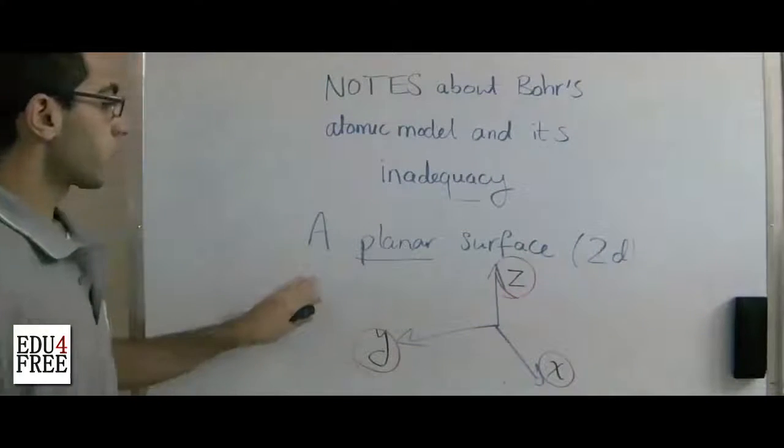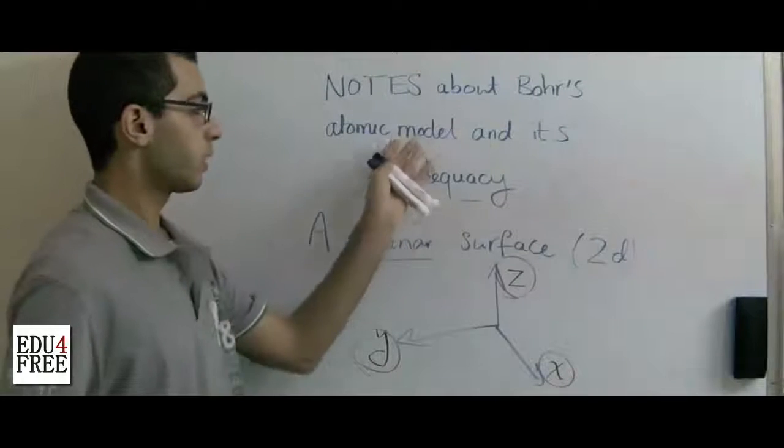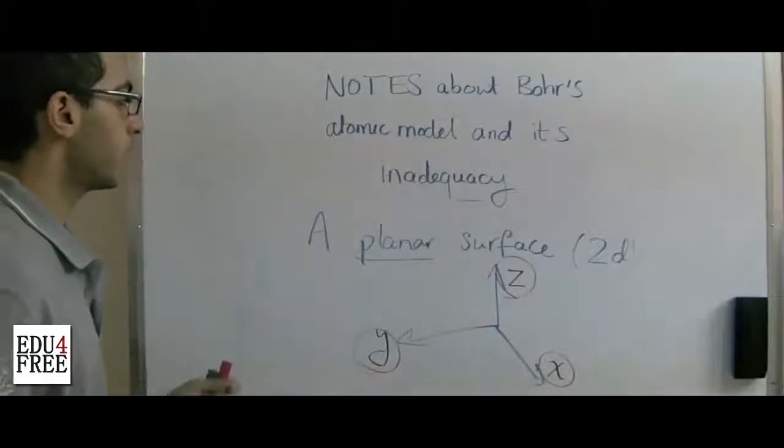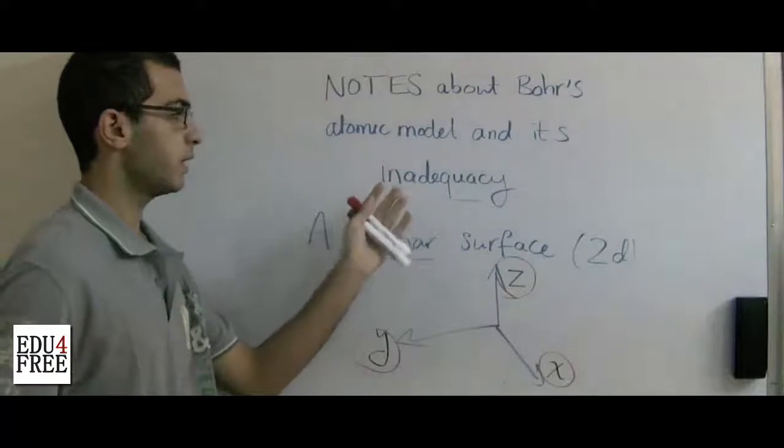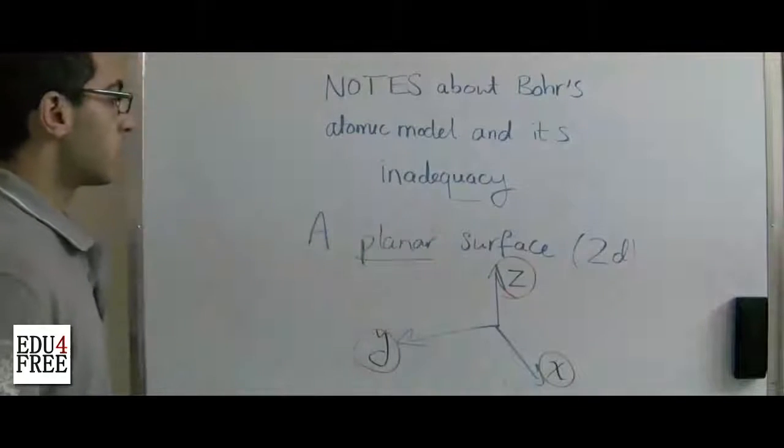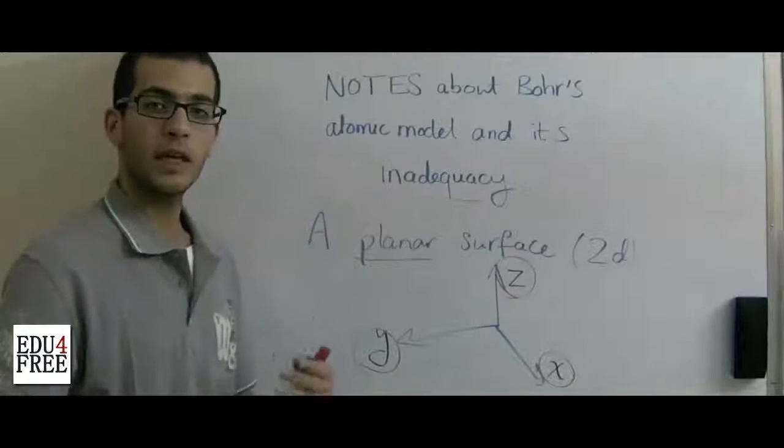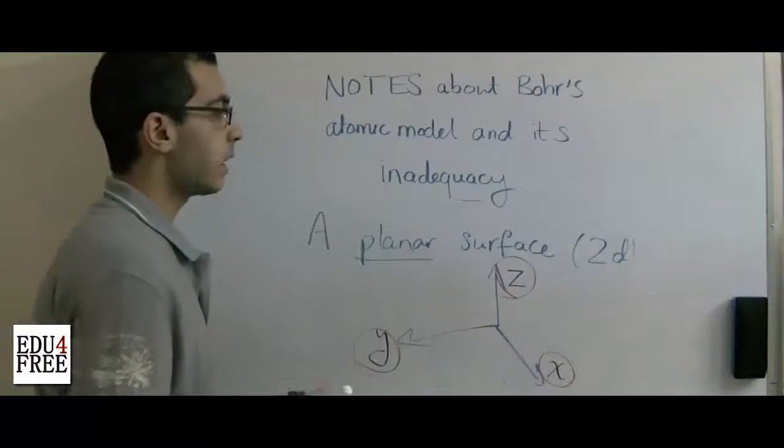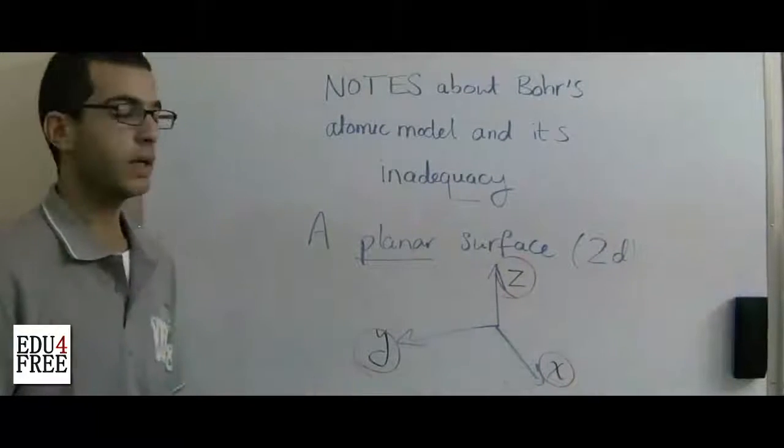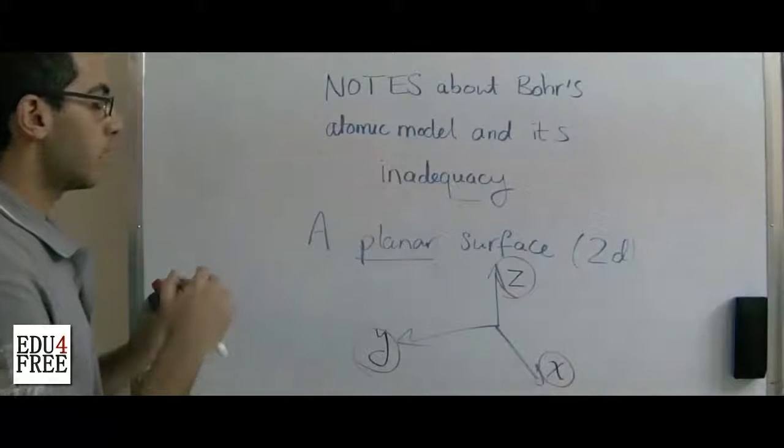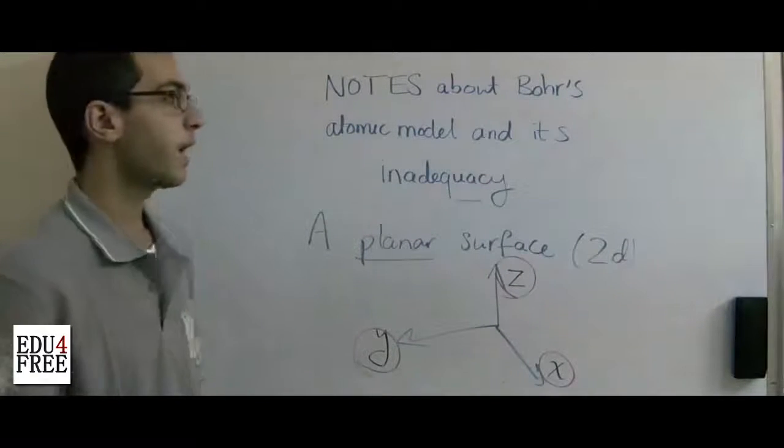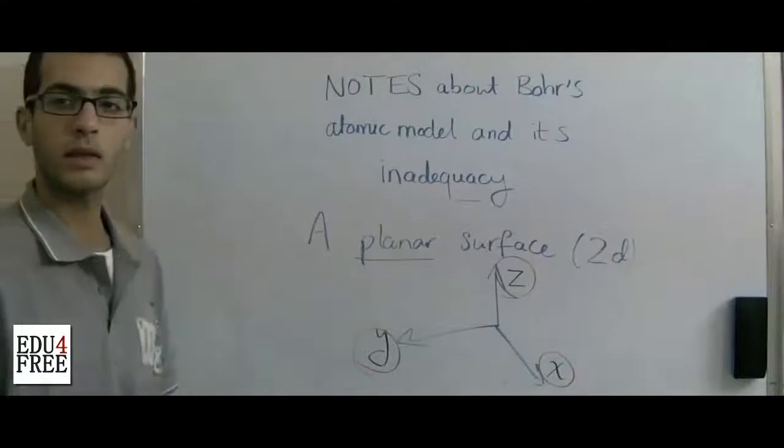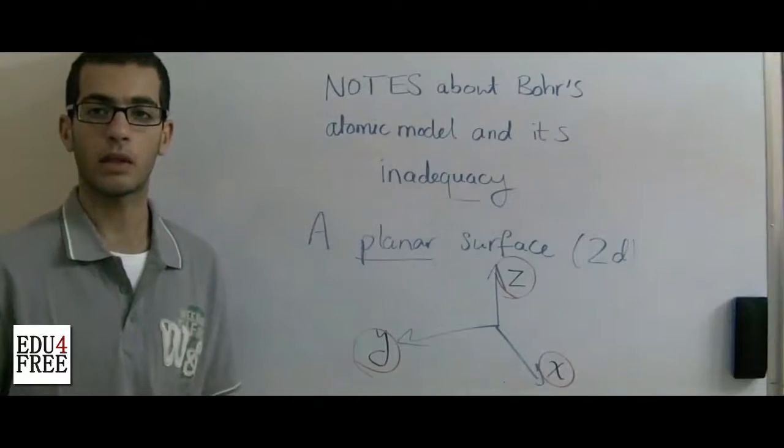So these were the defects of Bohr's atomic model, and this is the reason for its inadequacy. So the scientists began to research more and more till they reached the modern atomic theory and made the modern atomic model. And that's what we will talk about in the next time. And until then, thank you for watching.